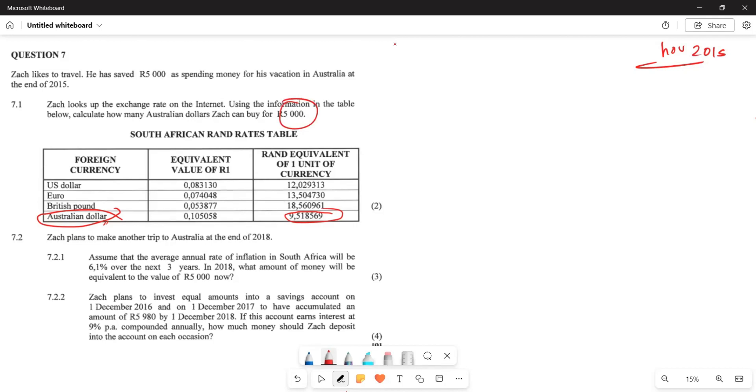So, now, the easier thing that you can simply do, you know that you have that representation. You have this as your Australian dollar. And remember, the 0.1058 is equivalent to $9.518569. So, the easier thing that you can simply do, you can just take this $5,000.